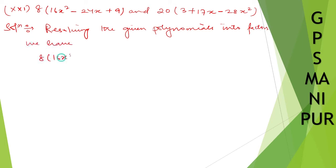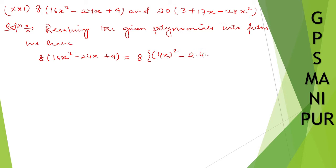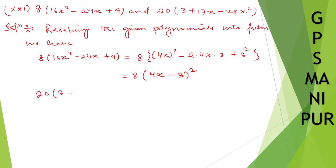16x² minus 24x plus 9. I can write this as 4x whole square minus twice times 4x times 3, that is 24x, plus 3 square. So this is a² minus 2ab plus b² form, which equals 4x minus 3 whole square.